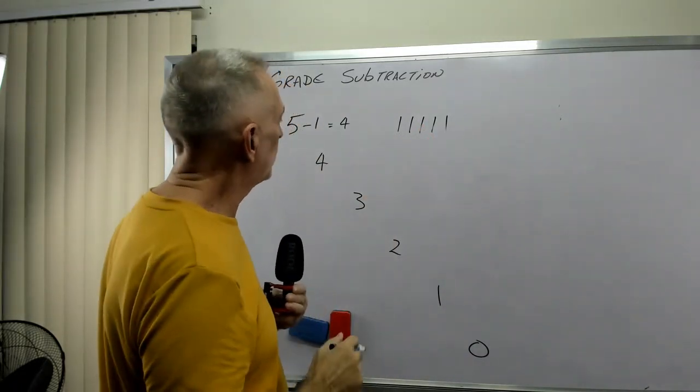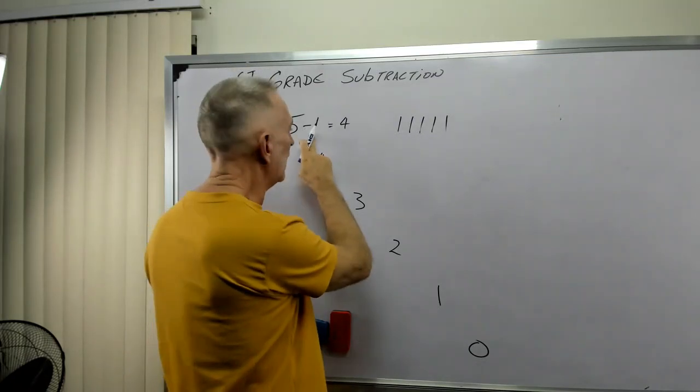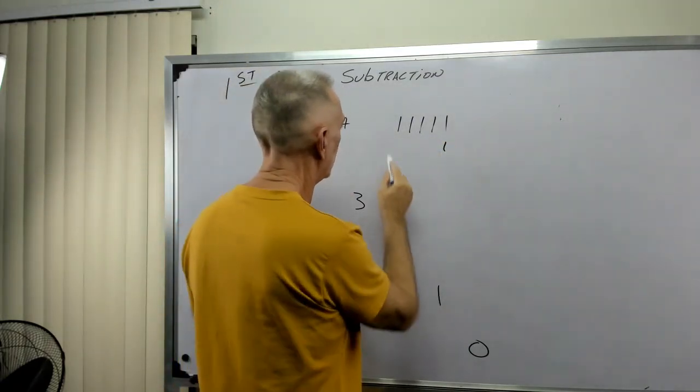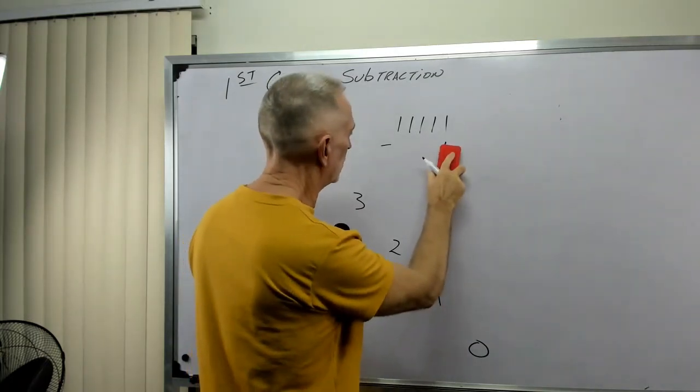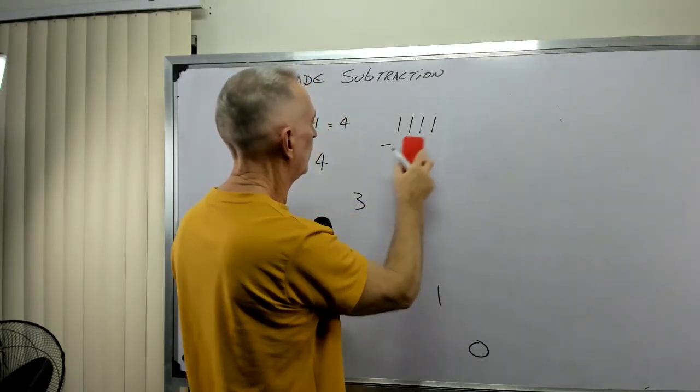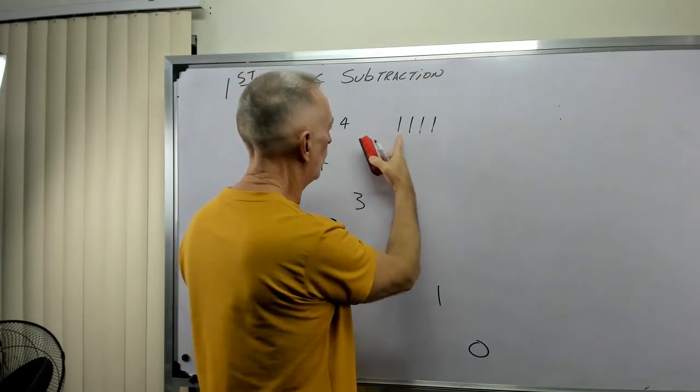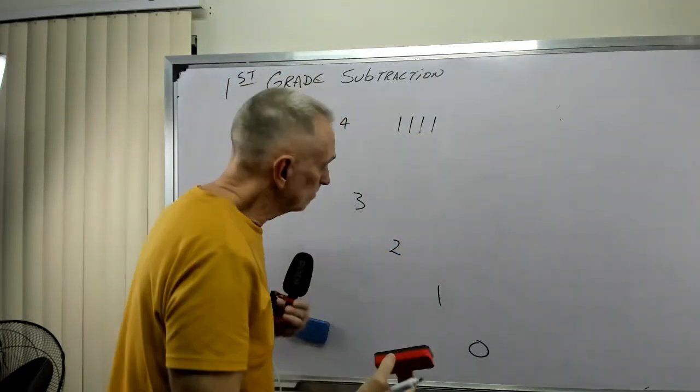But if we were to put, we're subtracting one. So five minus one. Well, we can see this one cancels out that one. So we end up with one, two, three, four.